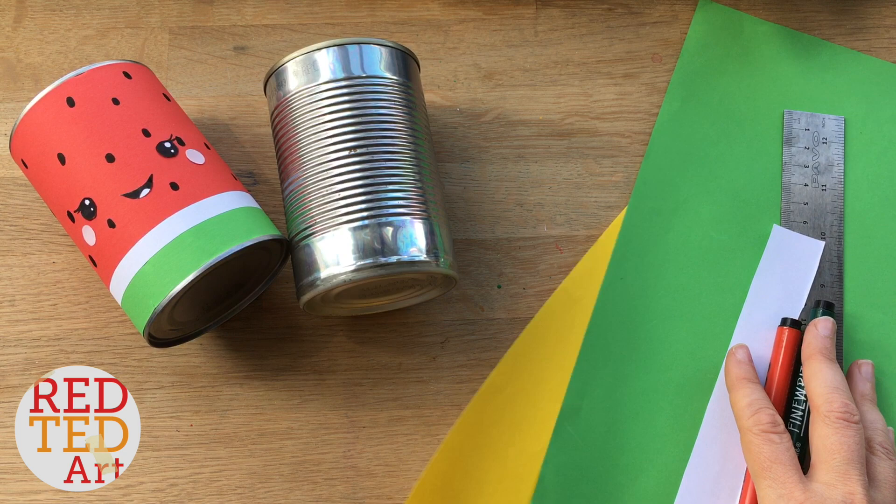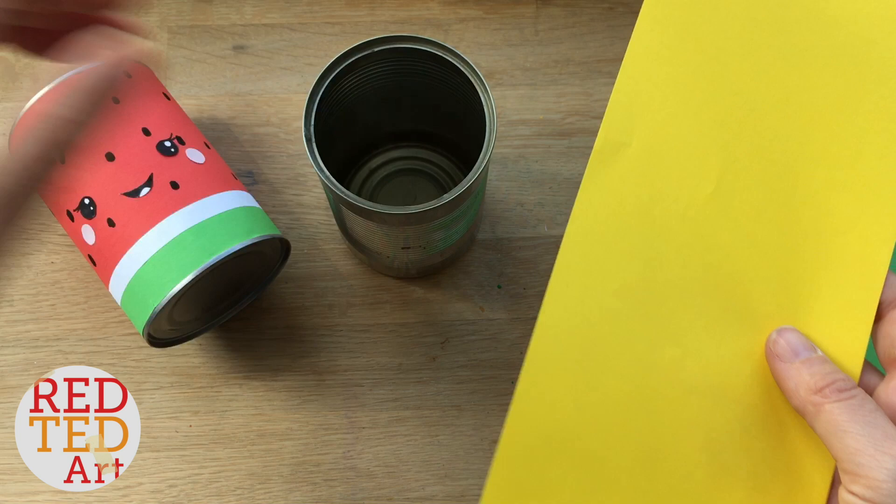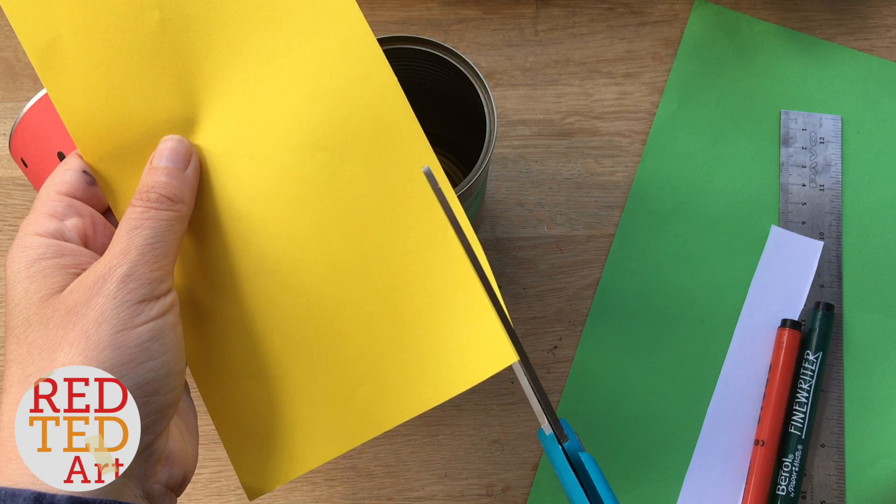So let's start off with the yellow paper. Coincidentally it's almost the right size, this was already left over from another project, but I'm going to just trim off literally just a tiny little strip because I want it to fit that little bit better. There we go, that's a nice fit.